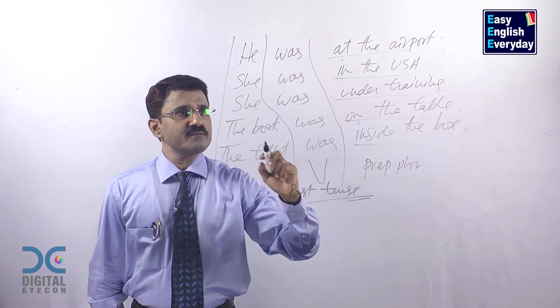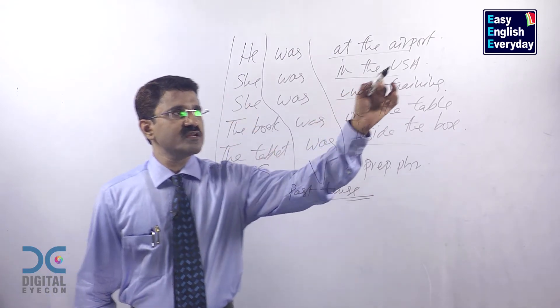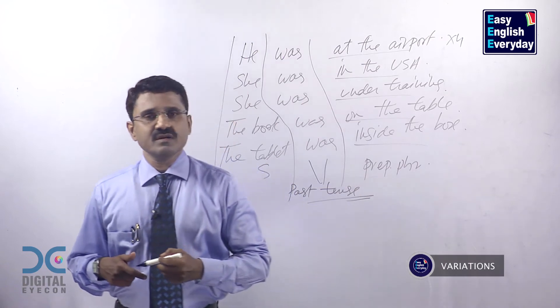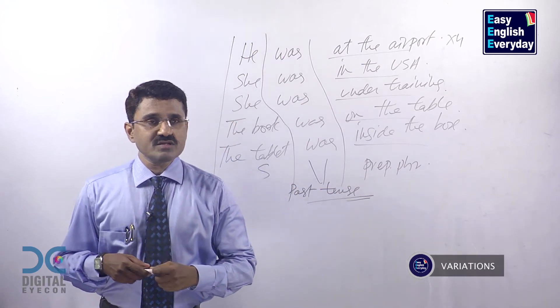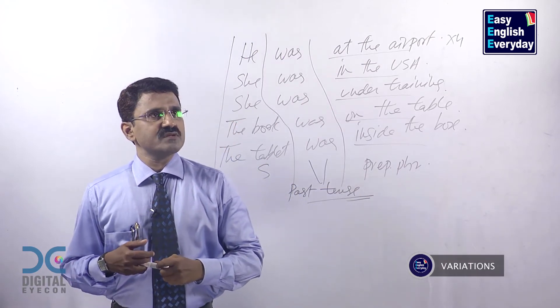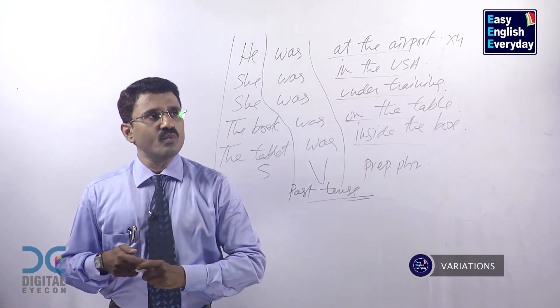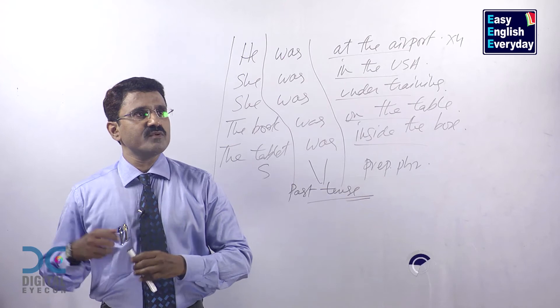Now every example can be used in four ways. He was at the airport. He was not at the airport. Was he at the airport? Wasn't he at the airport?